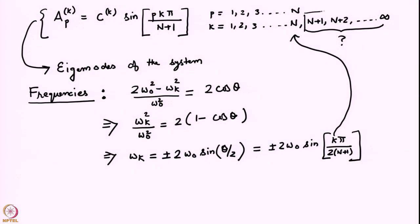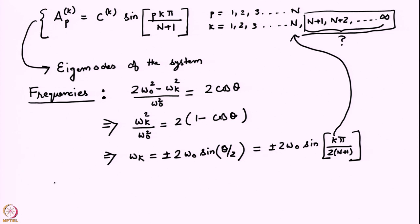Now let us answer the question: what are these extra values we are getting? We call them extra because this is a capital N degree of freedom system — I would expect N frequencies and N eigenvectors, but no more. However, k can actually go to N+1, N+2, and so on because we set L equal to k and L goes to infinity. We need to convince ourselves that these extra values do not give anything more physically meaningful. As a first step, let us calculate ω_(N+1) by substituting k = N+1 into the formula.